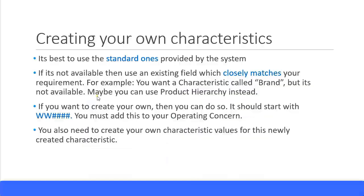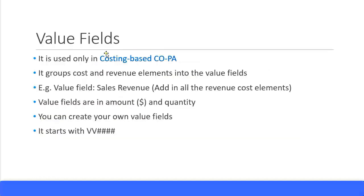You can create your own characteristics and your own values, but it is better to stick to the standard ones provided by the system. If you want to create your own characteristics, you should start with 'WW'. Value fields are only used in costing based COPA — generally use these for amount and quantity related fields. You can use the standard ones already available, but if you want to create your own value fields, you start with 'VV' followed by different characters.